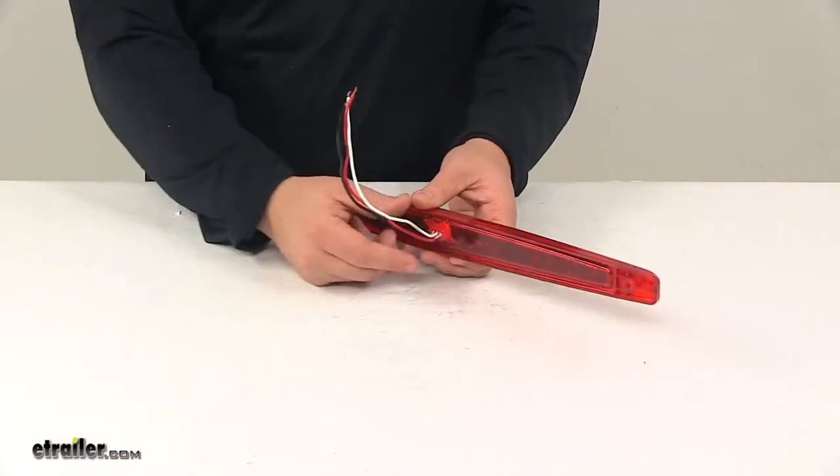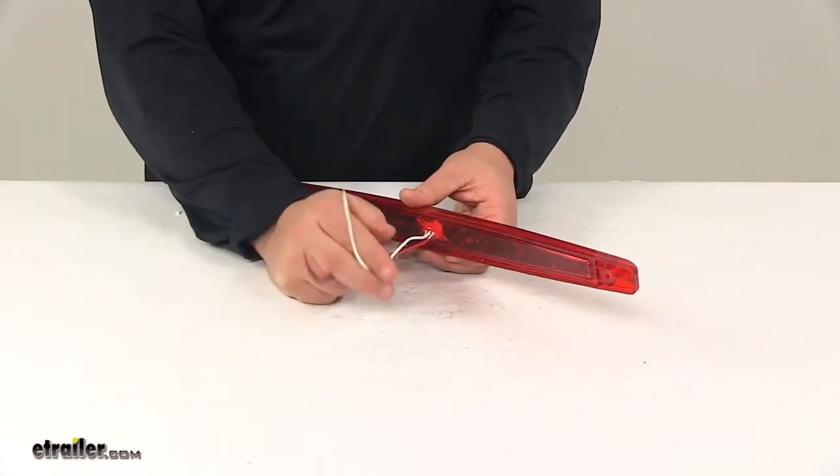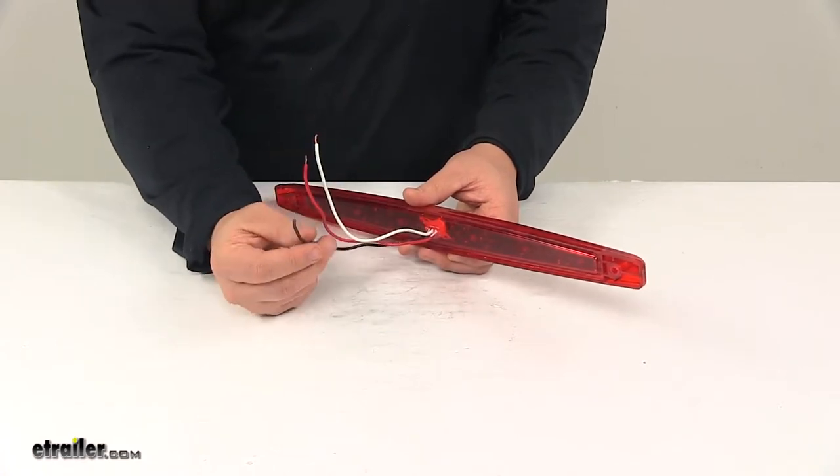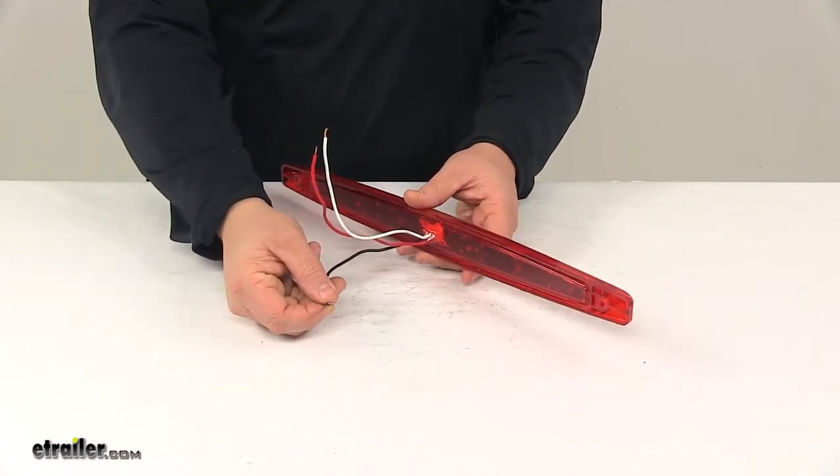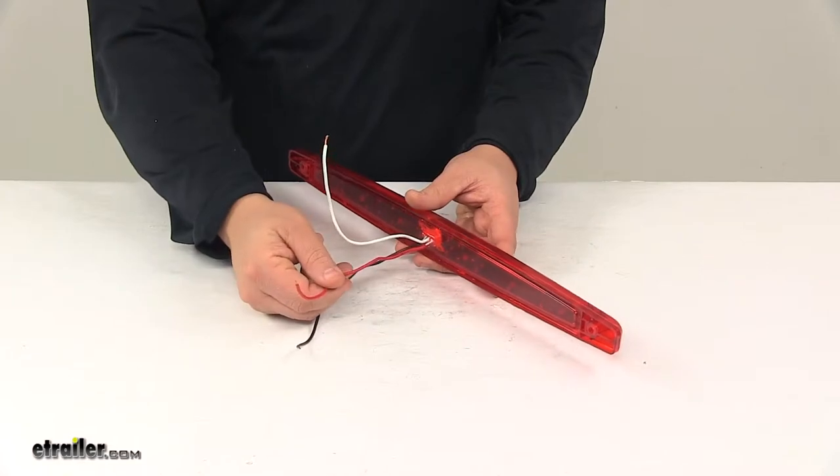When it comes to the wiring, it's a three wire pigtail. Your white wire is your ground wire, black wire is for the tail or running lights, and then red is for stop and turn.